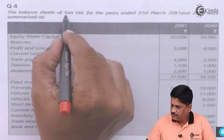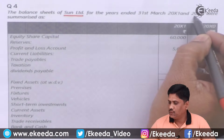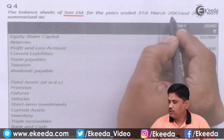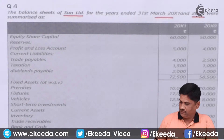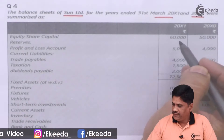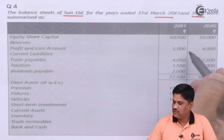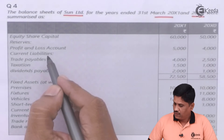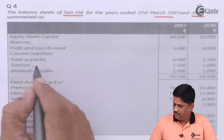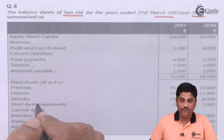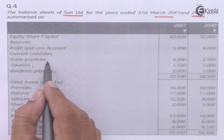The balance sheet of Sun Limited for the year ended 31st March 200X1 and 200X0 were summarized. You have the consecutive balance sheets for 200X0 and 200X1. Equity share capital earlier was 50,000, now it is 60,000. Reserves include an opening balance of 4,000 and closing balance of 5,000. For current liabilities, taxation and dividend payable are taken separately — for us, current liabilities will include only trade payable.